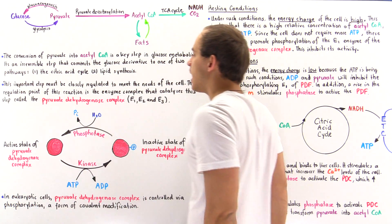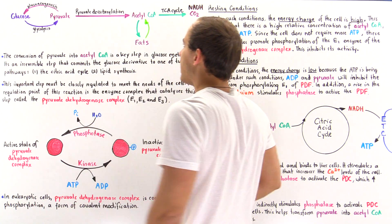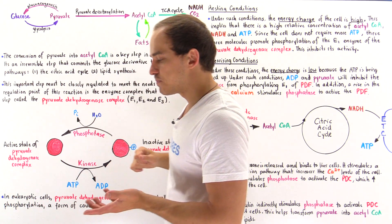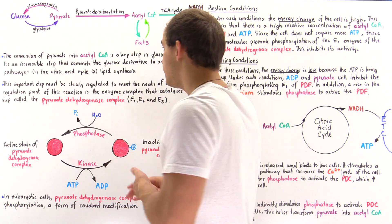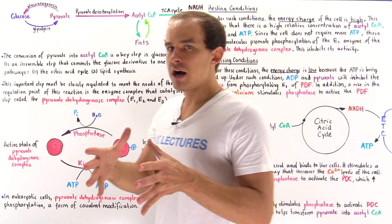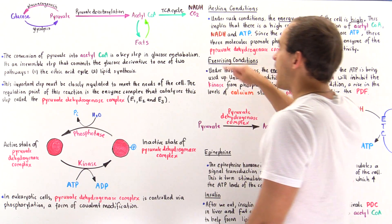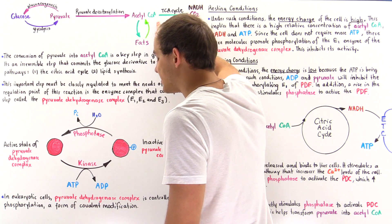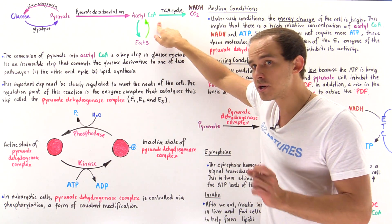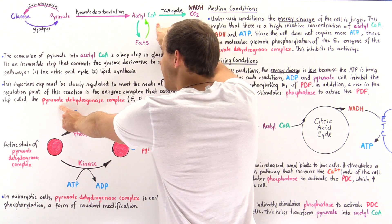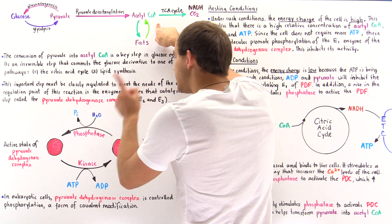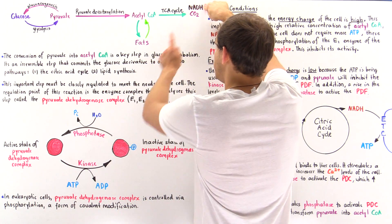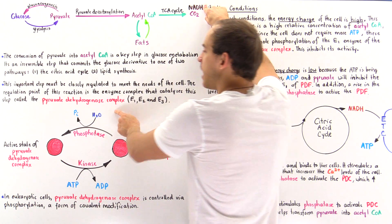These three enzymes are found within this complex and they catalyze different steps of pyruvate decarboxylation. Now, let's suppose in our cell we have plenty of ATP molecules. If we have plenty of ATP molecules, that basically means we're going to have plenty of intermediate molecules used to produce those ATP. So we're going to have high levels of NADH and acetyl-coenzyme A. Under such conditions, the acetyl-coenzyme A will act as an allosteric inhibitor — it will bind onto the E2 component of this complex and inhibit its activity. Likewise, NADH is also an allosteric inhibitor because it binds onto the E3 location of the complex.